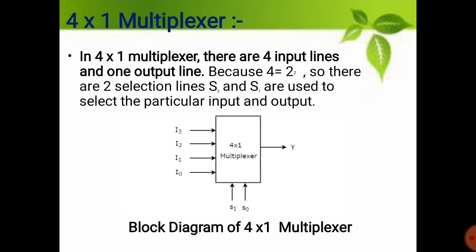Students, I am going to explain the 4-to-1 multiplexer. In a 4-to-1 multiplexer, there are 4 input lines and only one output line, so it is called 4-to-1. Because 4 equals 2 to the power 2, there are 2 selection lines here. S0 and S1 are used to select the particular input and output.